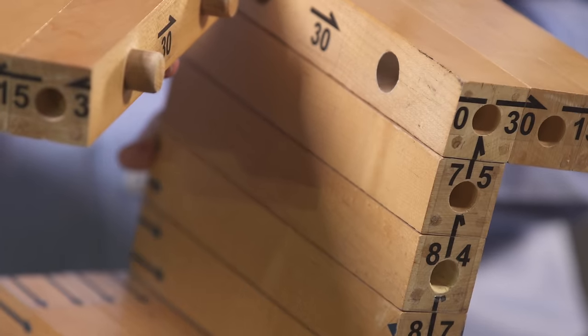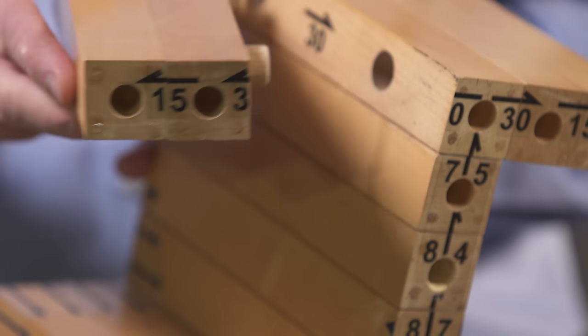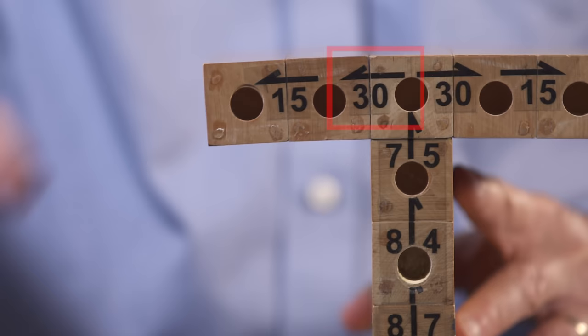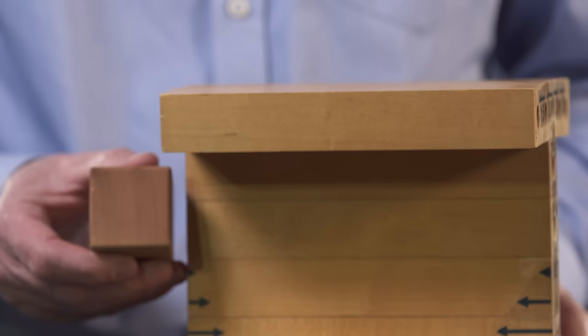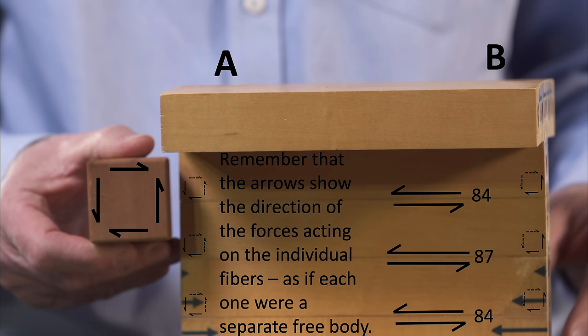We can show the shear stress on the cross-section using a single-sided arrow. At two fibers in, the shear stress is 30, and so that is the stress shown on the cross-section at that location. To analyze the web, we note that its shear operates in a vertical plane, unlike that in the flanges, which operates in a horizontal plane.